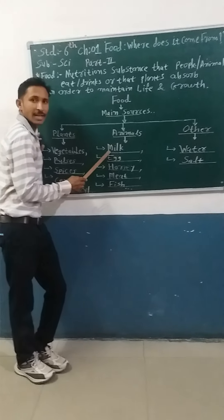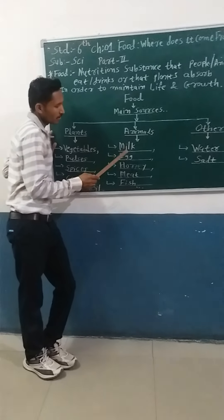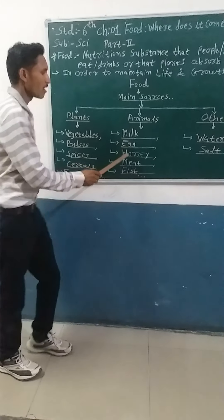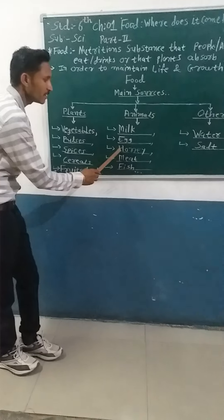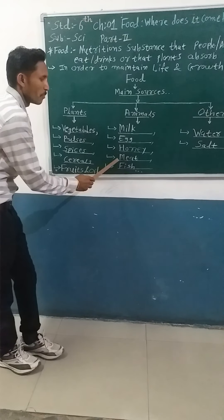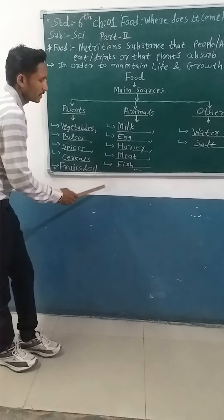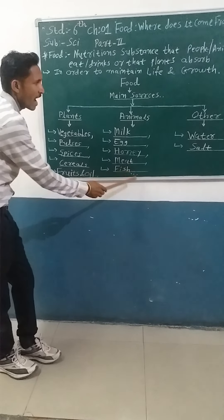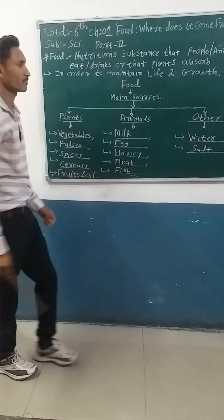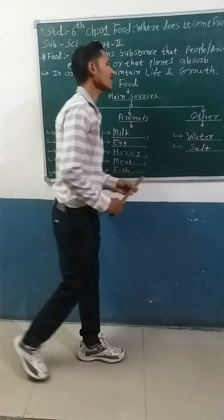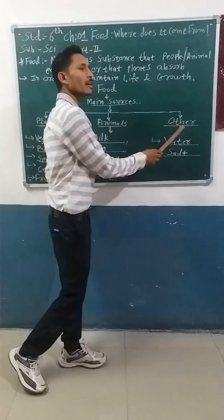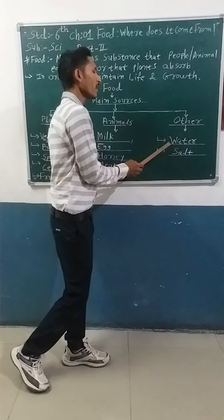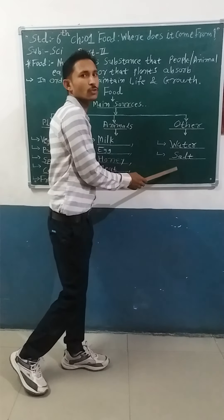From animals, we get milk, eggs, honey, meat, fish, and so on. And from other sources, we get water and salt.